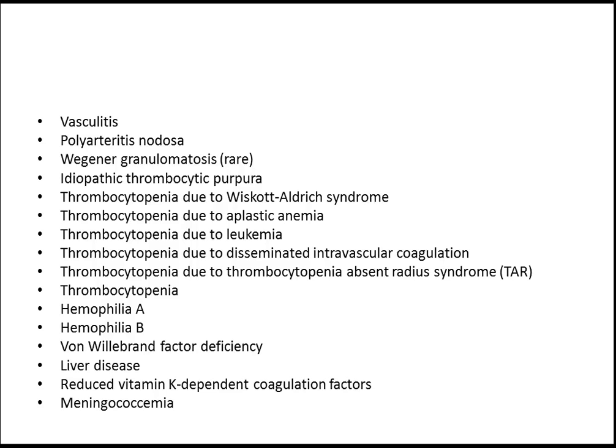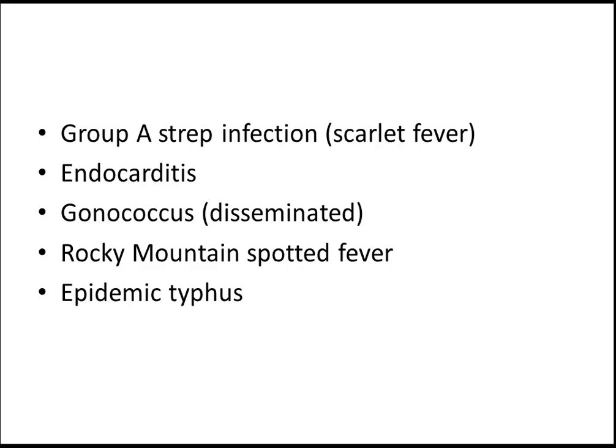Meningococcemia is very important — that is an infection. In general, infection can cause purpura in children. Other causes — like endocarditis — most of us know that it is a cause for purpura in children.